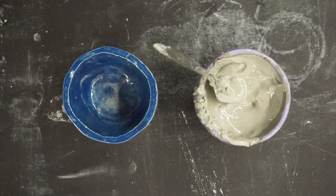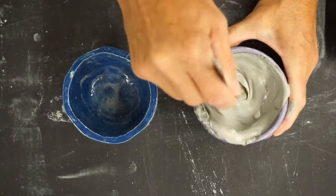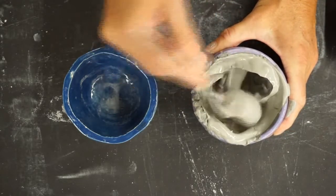Before you guys start adding your coils, you have to make what's called slip, S-L-I-P. And the slip is the glue of the ceramic world.